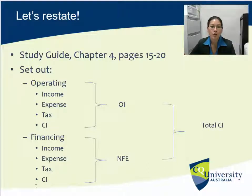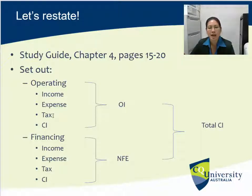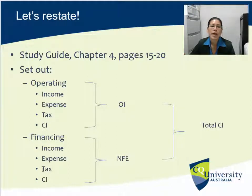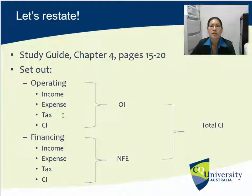We're going to split into O and F all of our items of revenue — which I'm calling income — then we're going to split expenses into O and F. This is our O section and this is our F section. Then we're going to split our tax: we include the tax reported amount — 100% up here — and when we get to the F section we calculate a portion that's attributable to the F section, then take it away from the 100% we've put up here.